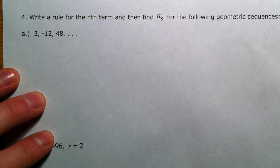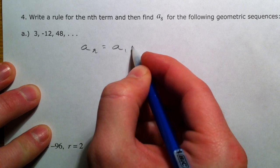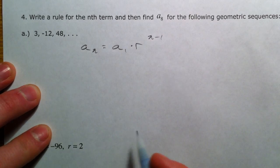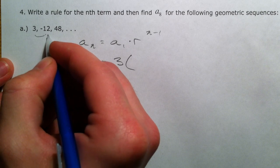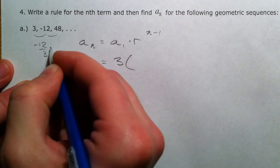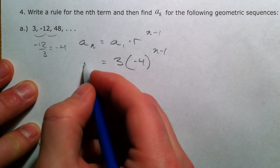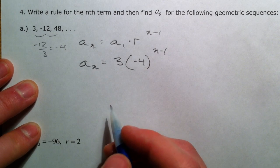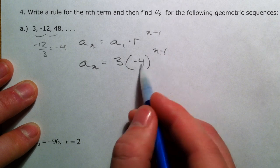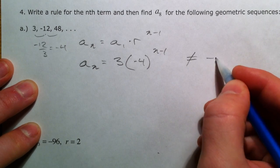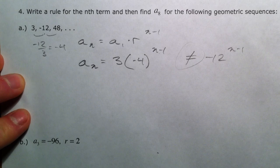So let's keep going. Write a rule for the nth term and find a sub 8 for the following geometric sequences. So we just wrote a sub n equals a sub 1 times r raised to the n minus 1, that formula we just looked at. Our first term 3 times... if we have negative 12 over 3, that's negative 4. We get the same thing. So r is negative 4 to the n minus 1. Resist the urge to multiply these two together. I'm saying this because order of operations, we have to do exponents before we do multiplication. So this is not equal to negative 12 to the n minus 1. Not true. Order of operations.